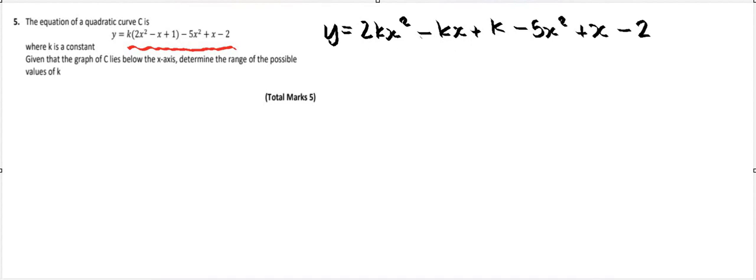Right, now we need to collect together our like terms because I've got an x squared term here and x squared term here, and I've got an x term here and an x here. So that means that y equals 2k minus 5 times x squared.